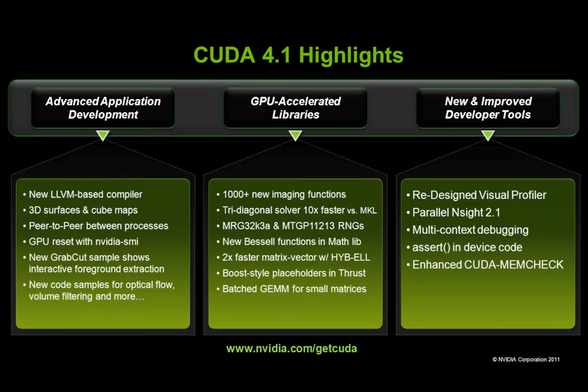There's a large number of additional features added in this release supporting advanced application development: new algorithms, a tridiagonal solver, new random number generation algorithms, support for boost-style placeholders in Thrust, and a batched interface for matrix-matrix operations on small matrices — all in the GPU-accelerated libraries that come with the CUDA toolkit, as well as new and improved developer tools available for free from www.nvidia.com.